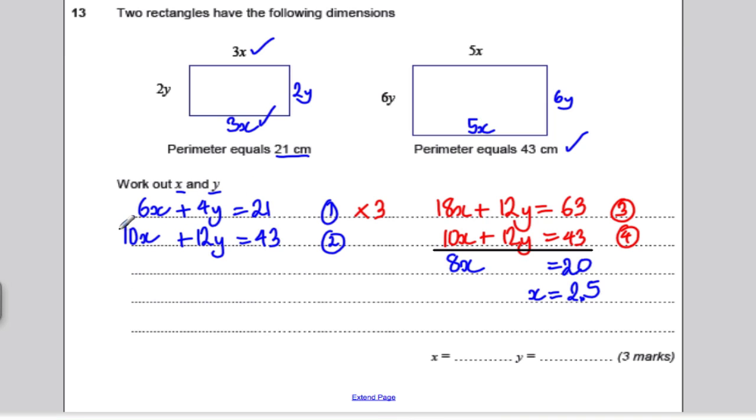Put in X is 2.5 to one of these to try and solve it. Let's put it maybe in this one. So, 10 times 2.5 is 25, plus 12Y is equal to 43. Subtract 25 of both sides. 12Y must be equal to 43 minus 25, which is 18. And Y is therefore 18 divided by 12, which you get as 1.5. So, X is 2.5 centimetres, Y is 1.5 centimetres.